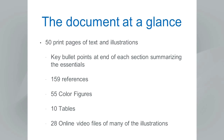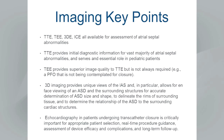The document contains over 50 print pages of text and illustrations with key bullet points at the end of each section. Tonight we're going through the Cliff Notes version. There are 159 references, 55 color figures, 10 tables, and currently 28 online video files. You can go to the ASE Journal of the American Society of Echo website to view these video files, which will further amplify the illustrations.